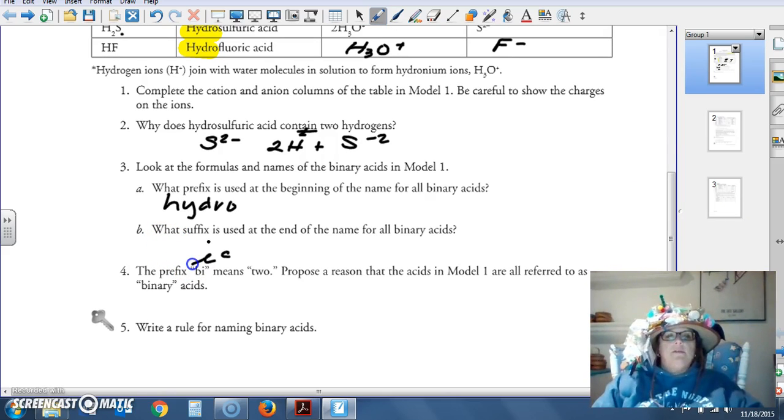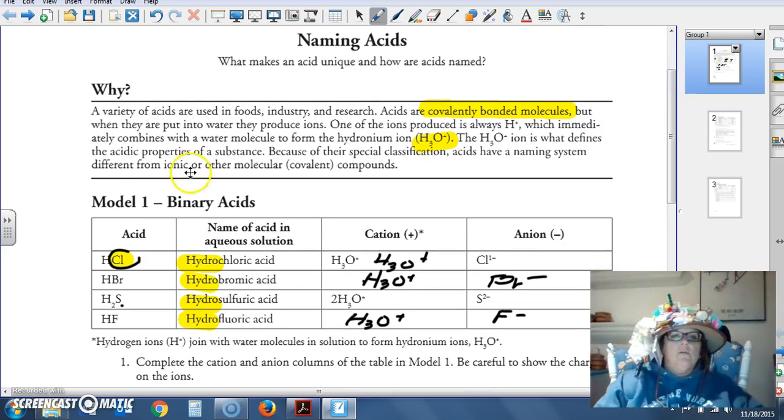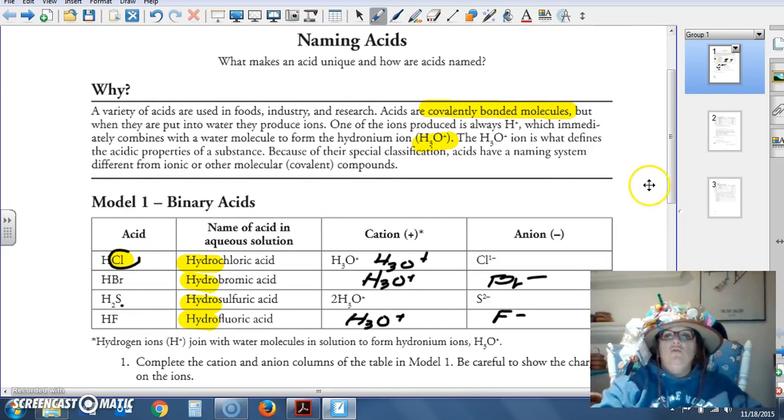The prefix bi means two. Propose a reason that acids in model one are referred to as binary acids. Why are they binary acids, folks? Right over here. It's because they're made of two different elements.